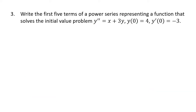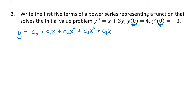One more of these — this one involves the second derivative, but we apply the same principles. Our series is centered at zero, which works because both initial values are given at zero. We start with our normal power series for y, and the fact that y(0) = 4 tells us c₀ = 4.